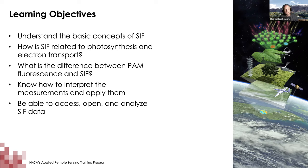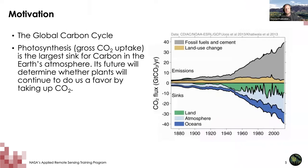The learning objectives for today are as follows. I want you to understand the basic concepts of solar-induced fluorescence and how fluorescence is related to photosynthesis and the electron transport within photosynthetic processes in a leaf. I also want you to understand the difference between PAM fluorescence and solar-induced fluorescence, and eventually be able to access, open, and analyze SIF data at global or regional scales.